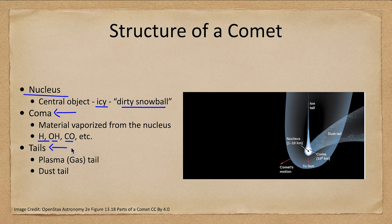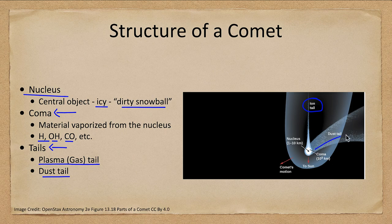The tails stretch back, and comets have two tails. They have a plasma or gas tail — also called the ion tail — which goes straight back, and a dust tail which kind of curves.